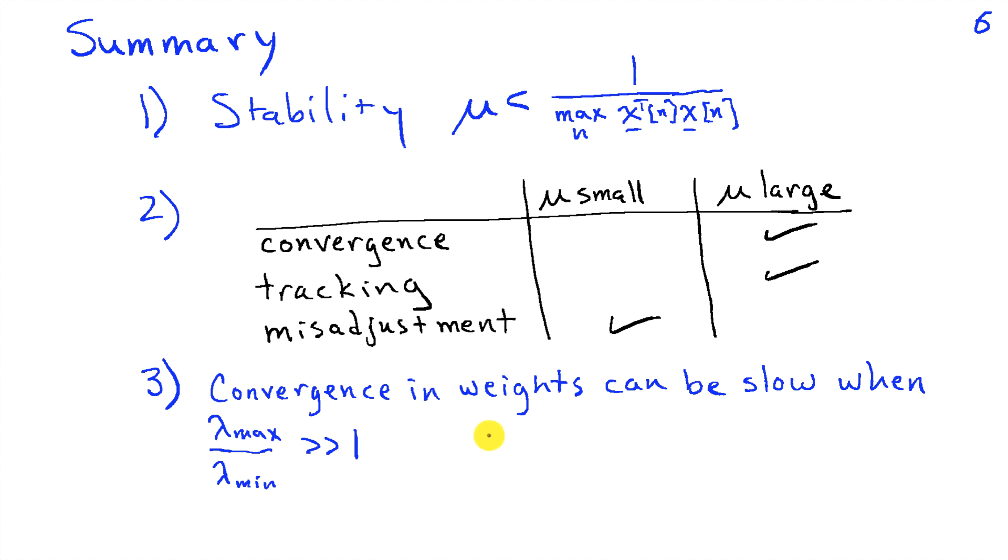So there's a trade-off in how small we make mu as to what performance features we want to emphasize. And finally, the convergence in the weights can be very slow when the ratio of the largest eigenvalue of r to the smallest eigenvalue is much, much greater than one. That leads to these highly eccentric elliptical contours, and we have fast convergence along the direction associated with lambda max, but very slow convergence along the direction of lambda min. So that's a general insight-based analysis of the convergence properties of the LMS algorithm that should guide you pretty well in using it.